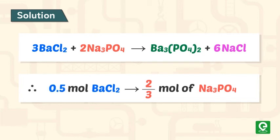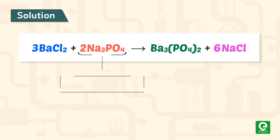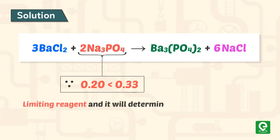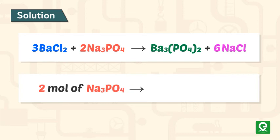This implies 1 mole of BaCl₂ will react with 2/3 moles of Na₃PO₄. Therefore, 0.50 moles of BaCl₂ will react with (2/3 × 0.50) = 0.33 moles of Na₃PO₄. Since the available amount of Na₃PO₄, which is 0.20 mole, is less than the required 0.33 mole, Na₃PO₄ is the limiting reagent and will determine the amount of product Ba₃(PO₄)₂ formed. Because 2 moles of Na₃PO₄ give 1 mole of Ba₃(PO₄)₂.